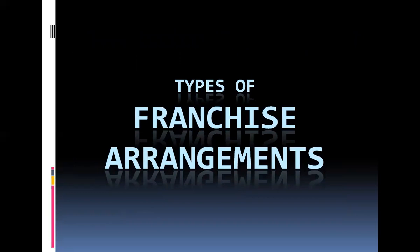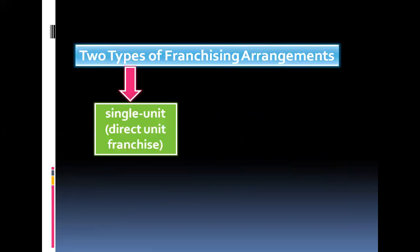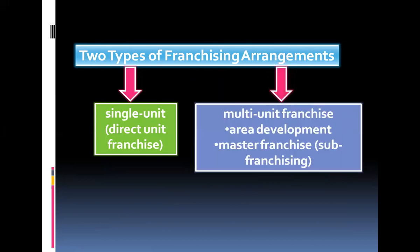Now let's move on to the types of franchise arrangements. Because so many franchisors, industries, and range of investments are possible, there are different types of franchise arrangements available to a business owner. First, we have the single unit or direct unit franchise, and the multi-unit franchise, which has two types: the area development and the master franchise or sub-franchising.